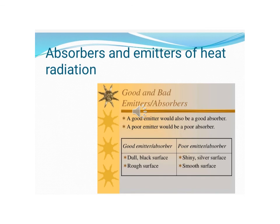When radiated heat energy falls on an object, some is reflected, some is absorbed, and the remaining part is transmitted. The amount of heat absorbed depends on the color of the object — dark-colored objects absorb and emit more heat radiation. Dark-colored objects are poor reflectors, while light-colored objects are good reflectors of heat.